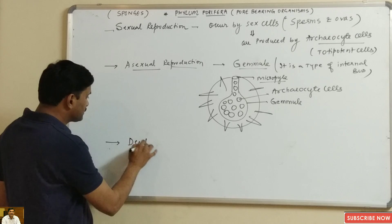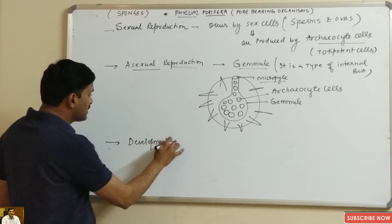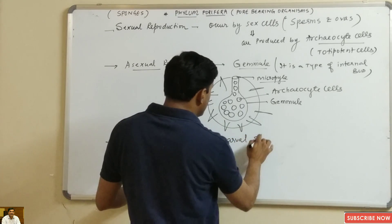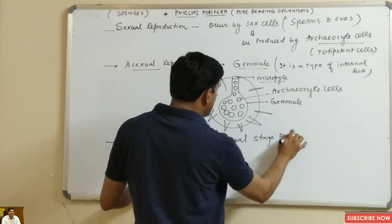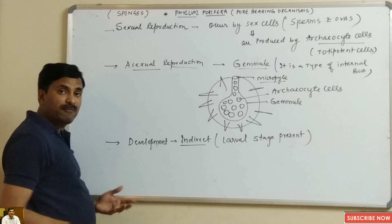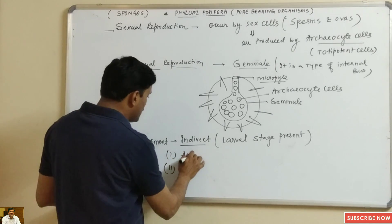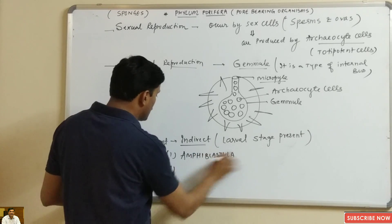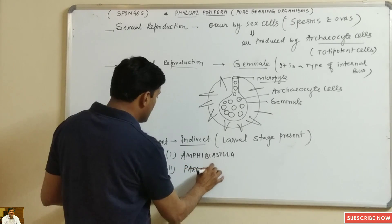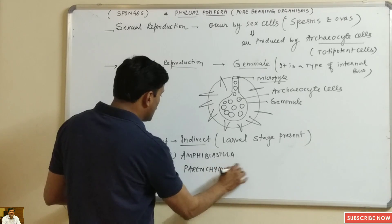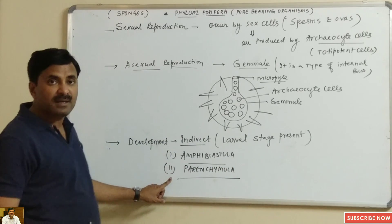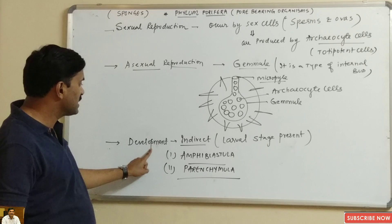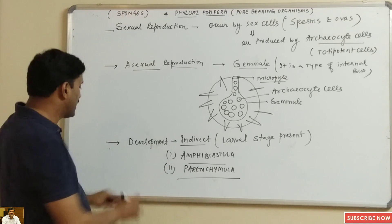If we talk about development, it is indirect, meaning a larval stage is present. They have two types of larval stages: one is known as amphiblastula and another is known as parenchymula. So development is indirect.